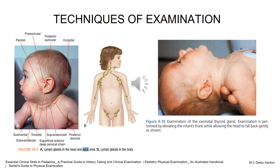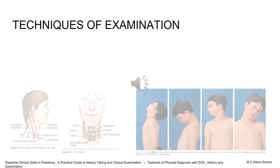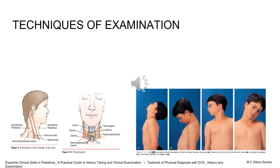Ask the older child to swallow and observe for any abnormalities or masses that move with swallowing. Also check for fullness, mobility, suppleness, and strength. Note the range of movement by having the child flex, extend, rotate, and laterally turn his or her head and neck.